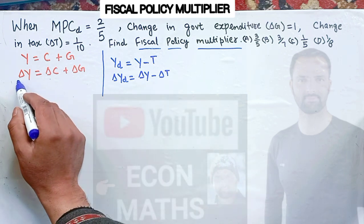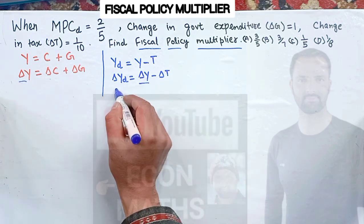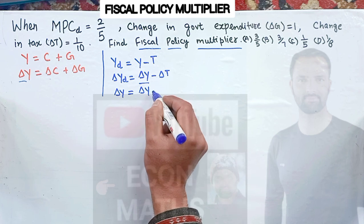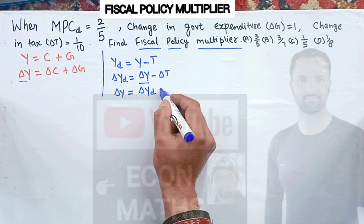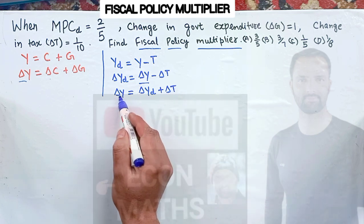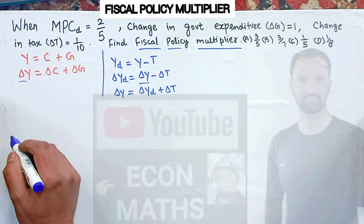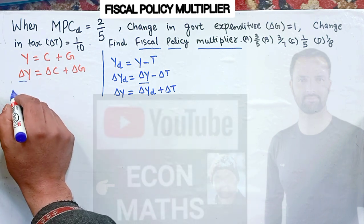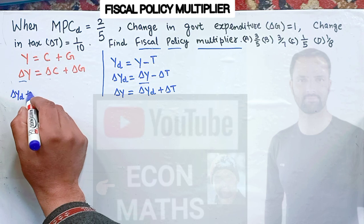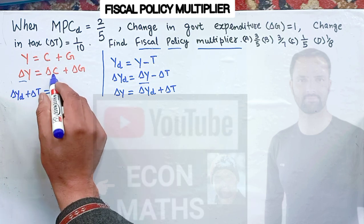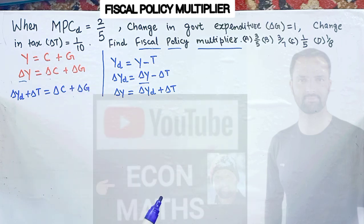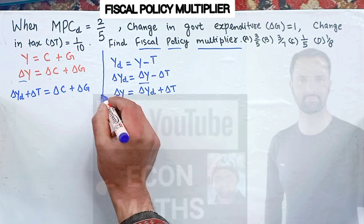Since we need the term ΔY, if we solve for it we get: ΔY equals ΔYd plus ΔT. Now substituting this value of ΔY into our income equation, in place of ΔY we write: change in disposable income (ΔYd) plus change in tax (ΔT) equals change in consumption plus change in government expenditure.